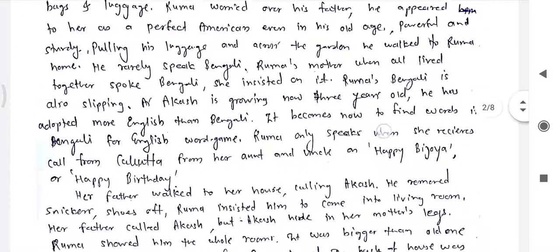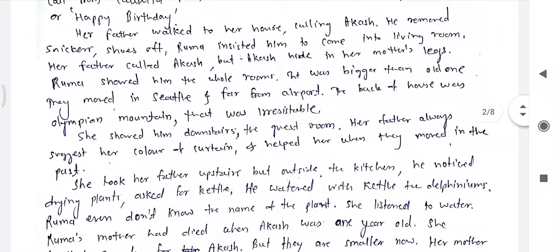Her father walked to her house calling Akash, but Akash hid behind his mother's legs. Ruma showed him all the rooms — she was very happy that her father had come to stay with her. The new house was bigger than the old one. They had moved to Seattle and it was far from the airport. The back of the house had the Olympic mountains, which was irresistible. She showed him the guest room downstairs.